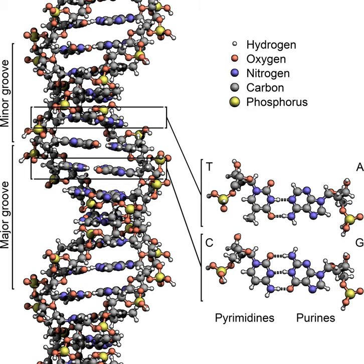The specificity of these transcription factor interactions with DNA comes from the proteins making multiple contacts to the edges of the DNA bases, allowing them to read the DNA sequence. Most of these base interactions are made in the major groove, where the bases are most accessible.